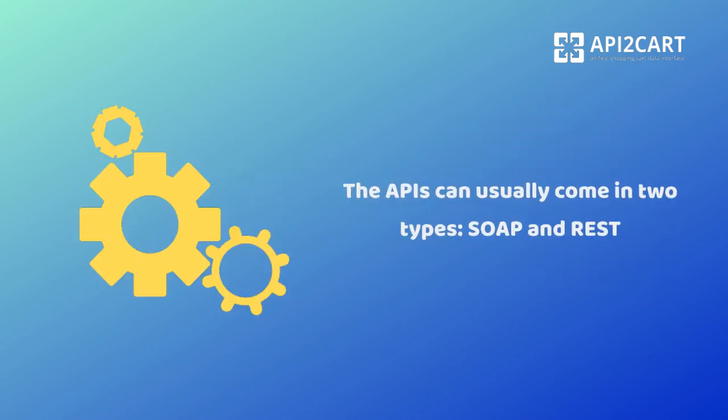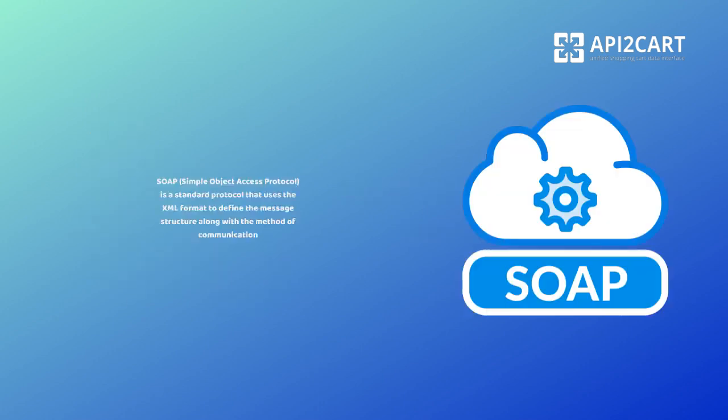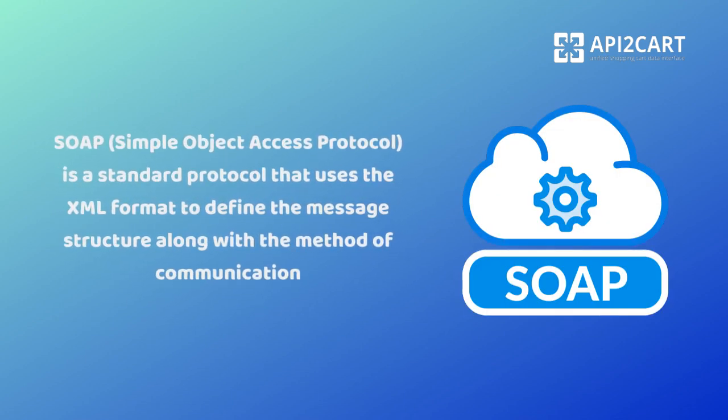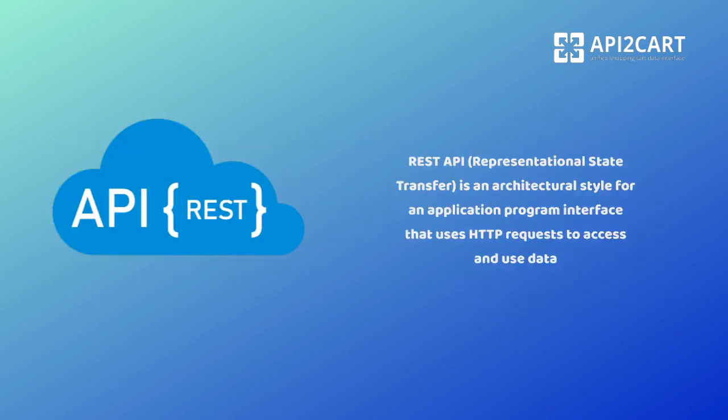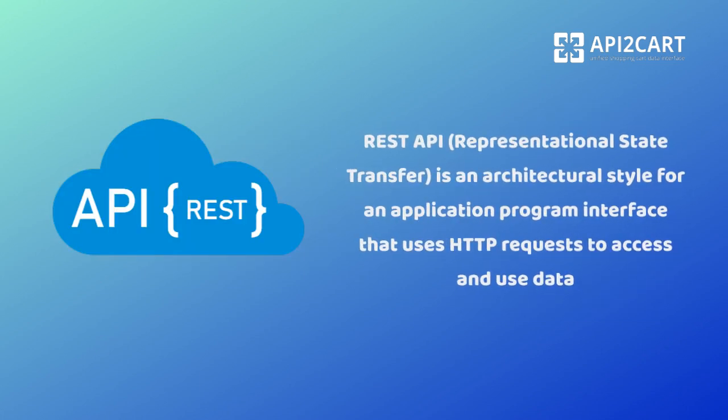APIs can usually come in two types: SOAP and REST. SOAP is a standard protocol that uses the XML format to define the message structure along with the method of communication. REST API is an architectural style for an application program interface that uses HTTP requests to access and use data.